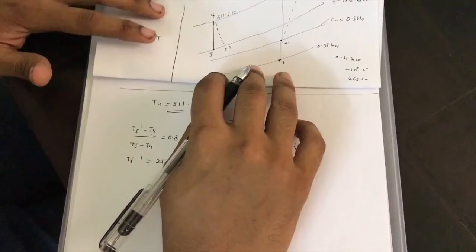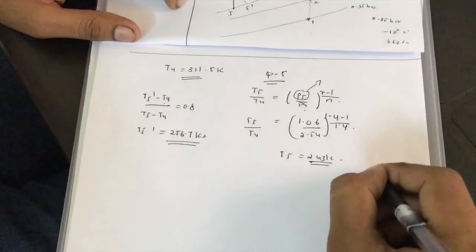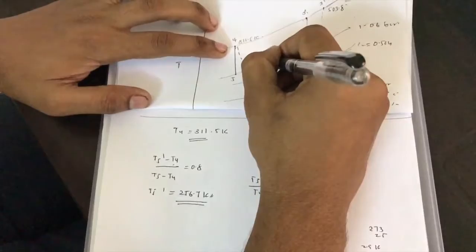This air at T5' = 256.7 K is then fed to the cabin. At the cabin, the temperature is 25 degrees Celsius = 273 + 25 = 298 Kelvin. This is Point 6.